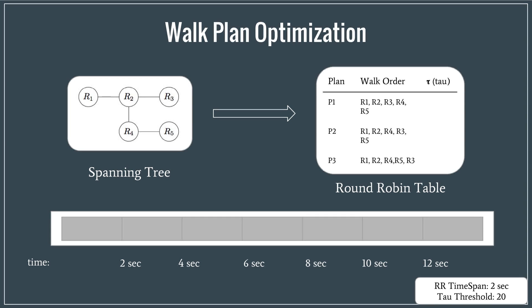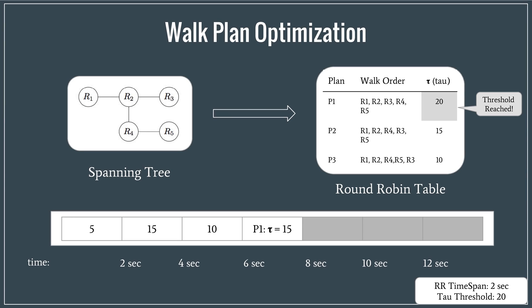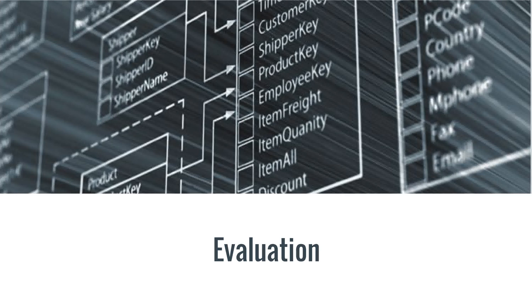So in order to choose the optimal plan, we look at all possible walk orders in a round robin fashion and calculate the number of successful walks tau for each of them. Once we reach a threshold number of successful walks, we stop. And then we'll select that walk plan which has at least threshold by two successful walks and minimum variance of estimator. In this way, we get an optimal plan without collecting any statistics beforehand.